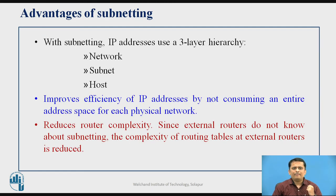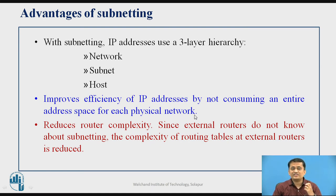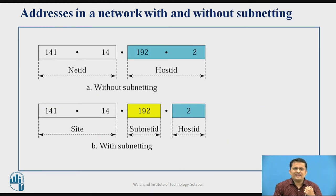With subnetting, the IP address has three layers: the network part, the subnetwork part, and the host ID part within the subnetwork. Subnetting results in improving efficiency by not consuming the entire address space. The problem with classful addressing is wastage of IP addresses, and that can be improved by going for subnetting within the network. Subnetting will also reduce the complexity of the router.